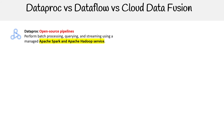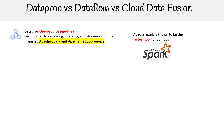Dataproc is for open source pipelines — Apache Spark, Apache Hadoop — so it can do batch processing, querying, and streaming. The real focus here is on Spark, because Spark is known to be the fastest tool, roughly 50 to 100 times faster than standard Hadoop jobs, and it's extremely popular. That is the reason why you'd go with Dataproc: you're using Apache Spark or Hadoop. The downside is there's more management involved — some of it's abstracted away, but not all of it.